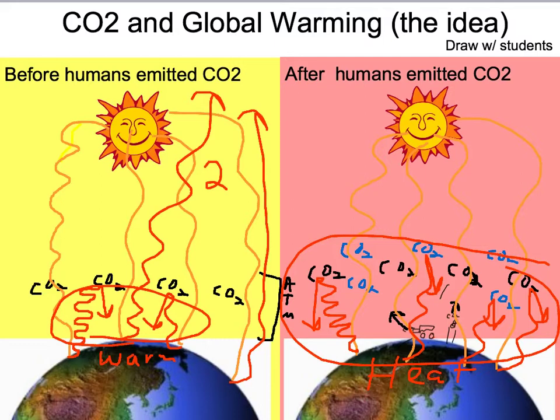We're not going to have time in this class to fully debate whether or not global warming is happening, but that's the idea. If you look up anti-global warming arguments, you'll see people say it's not actually the CO₂ causing it, or that it's activity of the sun and other arguments. I just wanted to give you an idea of what global warming, or the idea of it, is.